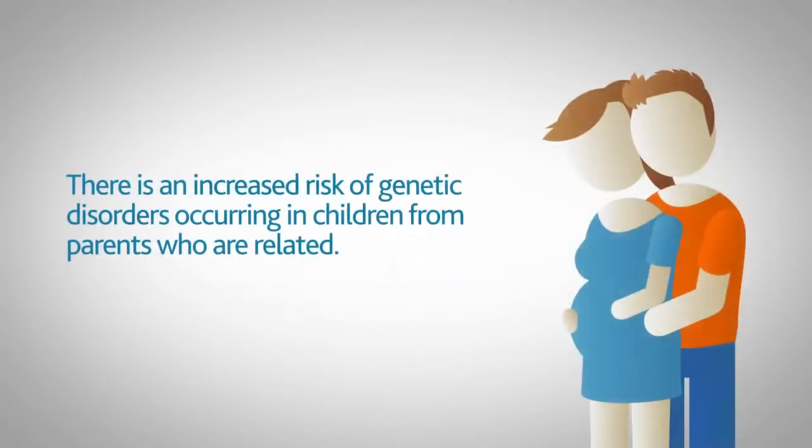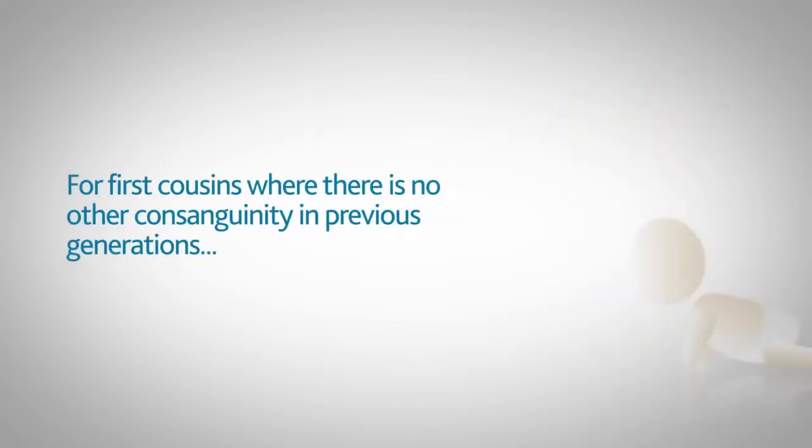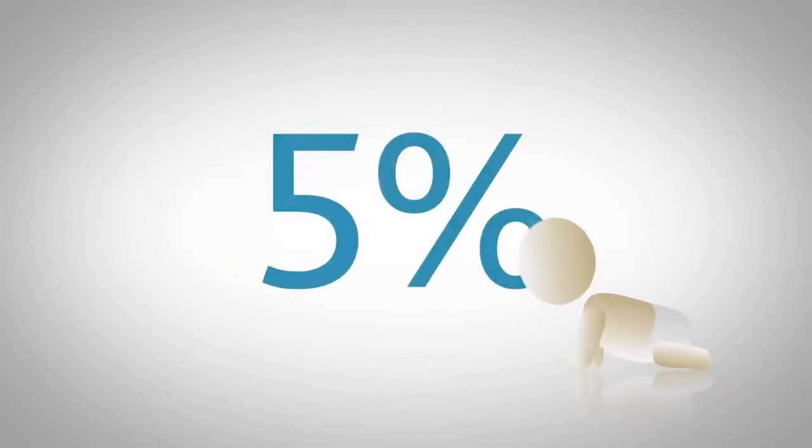There is an increased risk of genetic disorders occurring in children from parents who are related. For first cousins, where there is no other consanguinity in previous generations, this risk is approximately 5%.